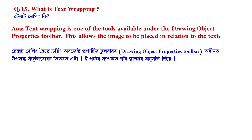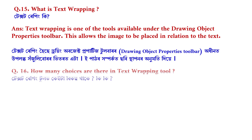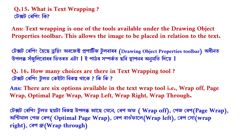Question number 16, the last question: how many choices are there in the text wrapping tool? There are six options available in the text wrap tool, and they are: wrap off, page wrap, optimal page wrap, wrap left, wrap right, and wrap through.